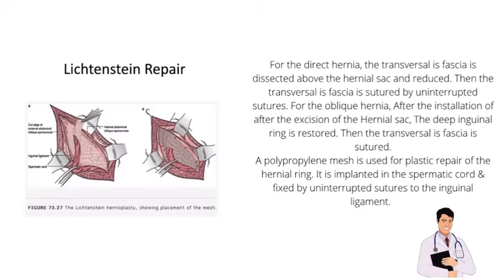Next, we have Lichtenstein repair. For the direct hernia, the transversalis fascia is dissected above the hernial sac and reduced; then the transversalis fascia is sutured with interrupted sutures. For the indirect hernia, after excision of the hernia sac, the deep inguinal ring is restored and the transversalis fascia is sutured. A polypropylene mesh is used for plastic repair of the hernia ring; it is implanted around the spermatic cord and fixed by interrupted sutures to the inguinal ligament.